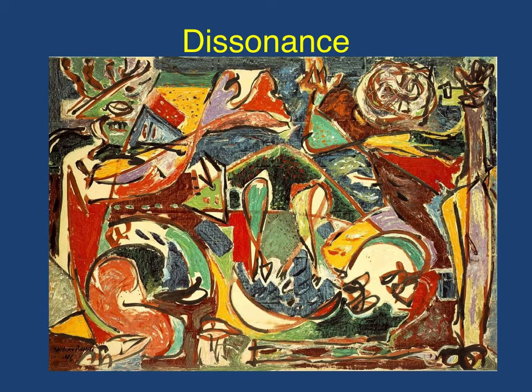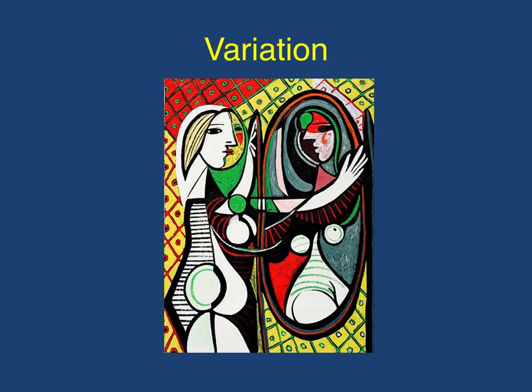The third part of repetition is what's called variation. Variation refers to the relationship of repeated items to each other. Again, back to the Picasso work — here we have a variation of different triangles, the diamonds, the ovals, and the colors within the work. Most of these are repeated throughout the entire artwork.